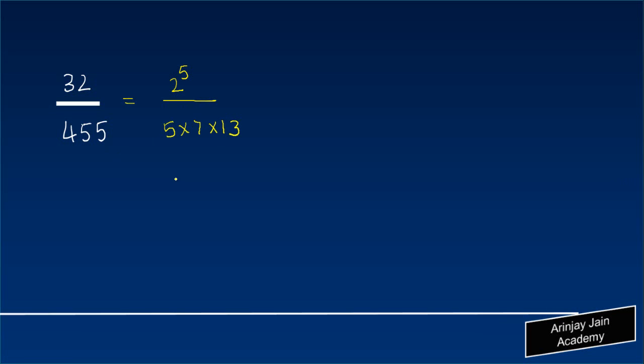Now when I look at 5 times 7 times 13, is the denominator being expressed in the form 2 to the power m into 5 to the power n? The answer is no, because this 7 and 13 is not getting cancelled out with the numerator. So the denominator actually has some more forms.